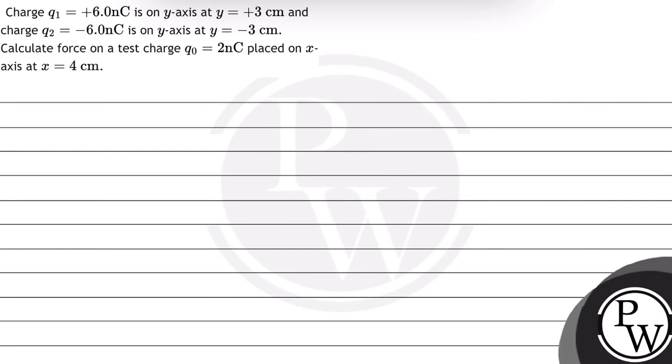Hello Bachcho! Let's read this question. Charge Q1 equals plus 6 nanocoulomb is on y-axis at y equals 3 cm, and charge Q2 equals minus 6 nanocoulomb is on y-axis at y equals minus 3 cm. Calculate force on a test charge Q0 equal to 2 nanocoulomb on x-axis at x equals 4 cm.